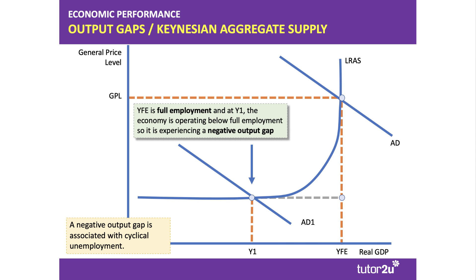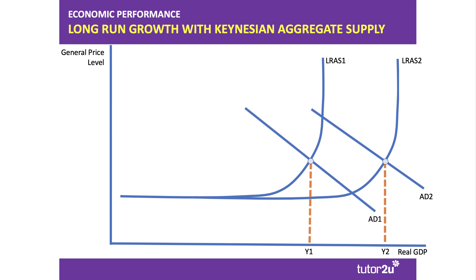Here's an output gap Keynesian model. Typically when the economy is well below full employment, the output gap is negative. As you get closer to YFE — full employment — the aggregate supply becomes inelastic and the output gap becomes positive. Using the Keynesian model to show economic growth, we see an increase in aggregate demand, an outward shift in AD, perhaps caused by a demand-side stimulus or an increase in exports, matched by an increase in productive potential, or perhaps an increase in productivity — the capital stock has grown, increasing efficiency or innovation on the supply side. You're shifting the curve to tell a story, to build a narrative about what might have happened to the economy.